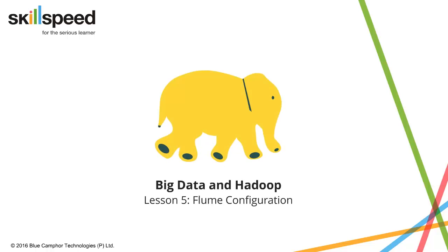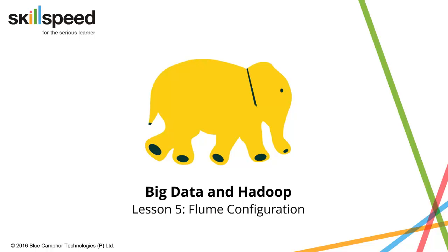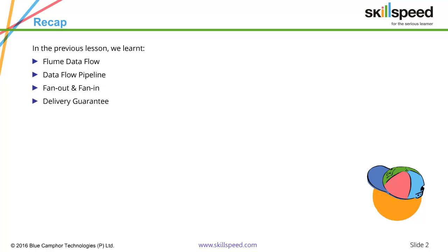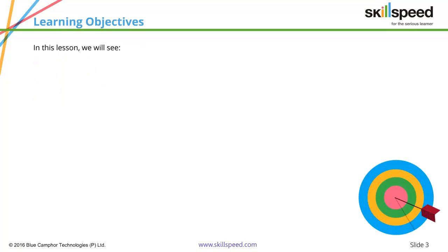Welcome to lesson number 5, module 9 of the Big Data and Hadoop Developer course. In this lesson, we will be talking about Flume configuration. Before we proceed, let's have a quick recap of the previous lesson. In the previous lesson, we learned about Flume data flow, the fan out and fan in scenarios, and we also had a look at the delivery guarantee aspect of Flume.